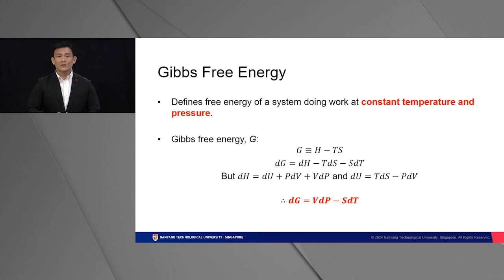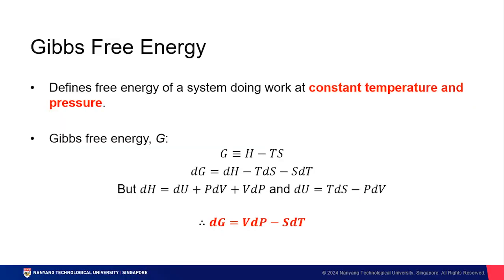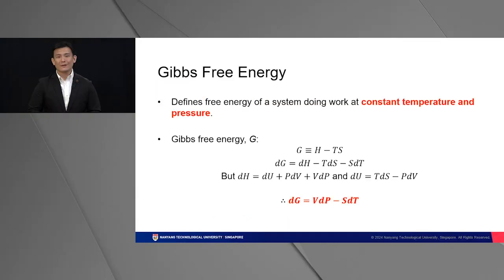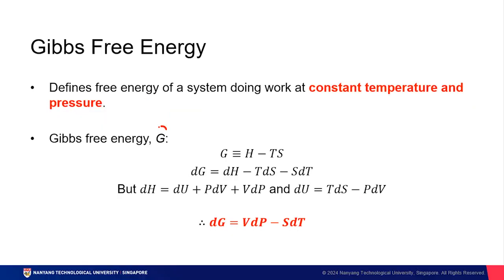Here, I want to introduce you to another very important term for free energy known as Gibbs free energy. Gibbs free energy defines the free energy of a system doing work at a constant temperature and pressure. You will most likely encounter Gibbs free energy throughout your entire career as a material scientist. Why? Because we assume work is done at constant temperature and pressure in many reactions. Gibbs free energy is defined with the symbol G and has the equation G = H - TS.